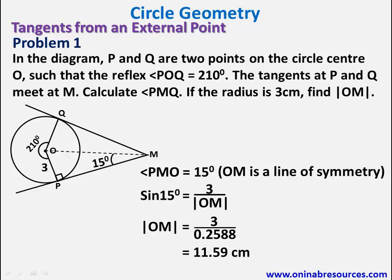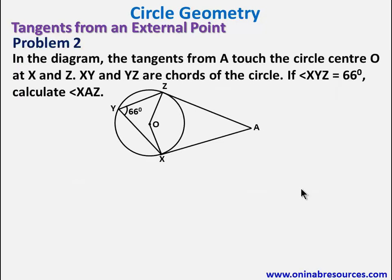Then we go ahead to problem 2. For problem 2, in the diagram, the tangents from A touch the circle center O at X and Z. XY and YZ are chords of the circle. If angle XYZ is 66 degrees, calculate angle XAZ.